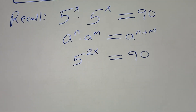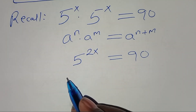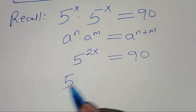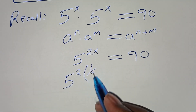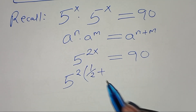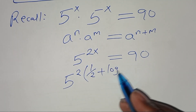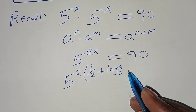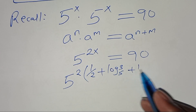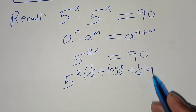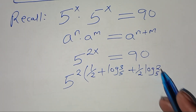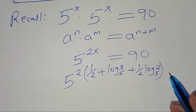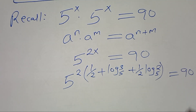Substituting the value of x, we have 5 to the power of 2 times (1/2 plus log base 5 of 3 plus 1/2 log base 5 of 2), and this gives a value of 90.